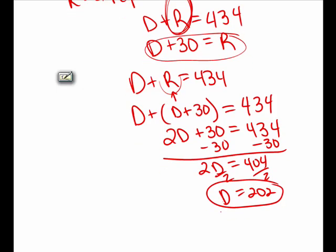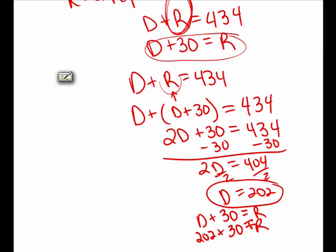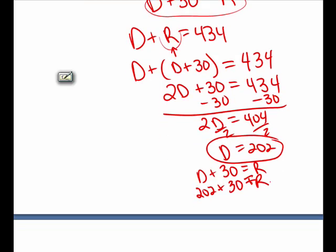We know that D plus 30 equals R. Now that we know D is 202, we get R equals 202 plus 30, so the number of Republicans was 232.